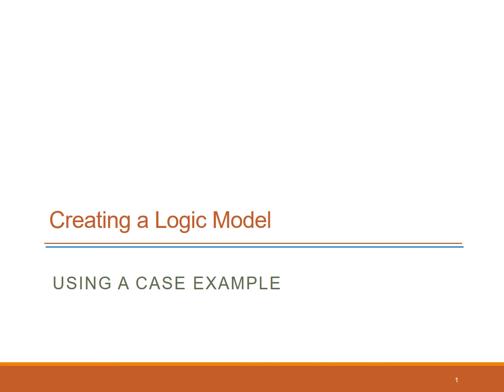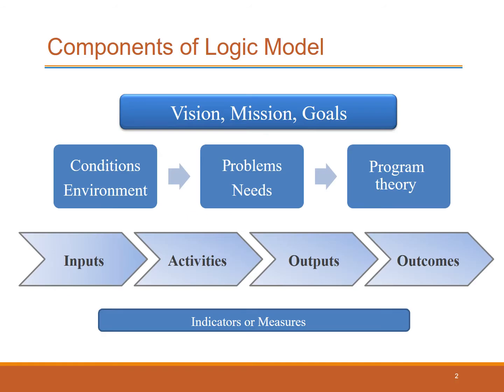In this module, we will go over the components of a simple logic model and then create one through an example. As shown in the diagram above, your logic model includes a statement of your program mission and is rooted in the conditions of the environment, problems, or needs in the community and a theory for how you will be addressing them. The components of your logic model include inputs, activities, outputs, and outcomes. We also prefer to include measures or indicators to evaluate progress towards the program's goals.